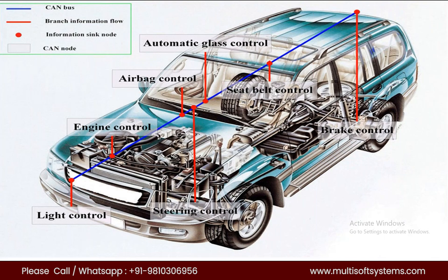In the latest vehicles being manufactured, there is not only one network line — there will be many network lines which help the ECUs communicate with each other. This is some physical theory which will be explained further, but this is the basic concept of how our car looks internally with ECUs and the network.